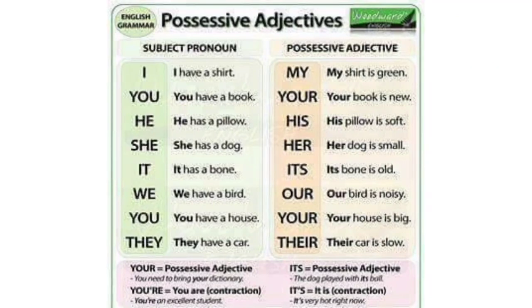Kita pelajari kembali mengenai possessive adjectives. Lihat di lajur sebelah kiri: I have a shirt — My shirt is green. You have a book — Your book is new. He has a pillow — His pillow is soft. She has a dog — Her dog is small. It has a bone — Its bone is old. We have a bird — Our bird is noisy. You have a house — Your house is big. They have a car — Their car is slow.